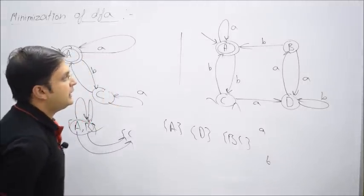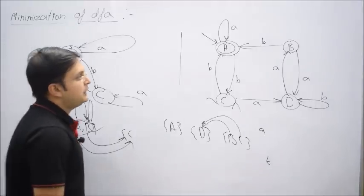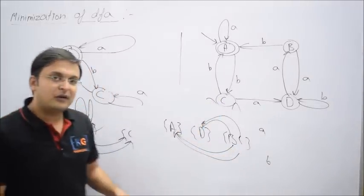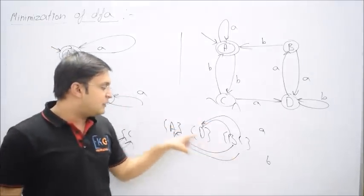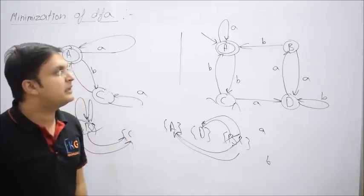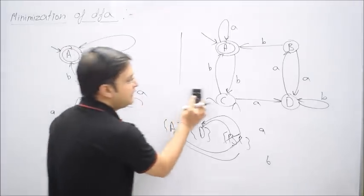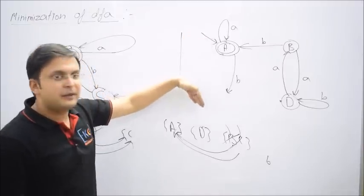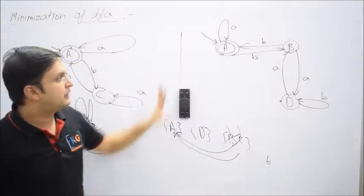Let's check B and C in the next iteration. B on a still goes to D and C on a also goes to D — same behavior. B on b goes to A and C on b also goes to A — exactly the same behavior. So B and C are equal states. We can remove one of them — let me remove C. All outgoing transitions of C are removed immediately. The incoming transition to C now redirects to B since B and C are equal. That gives us the resulting minimal DFA.